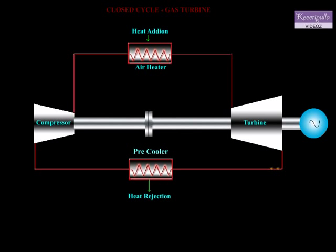The exhaust from the turbine is passed through the heat exchanger where it exchanges heat to the compressed air. Air from the heat exchanger is passed through a pre-cooler before it enters into the compressor again.